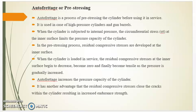Now we will see autofrettage or pre-stressing. Autofrettage is a process of pre-stressing the cylinder before putting it into service. It is used in high-pressure cylinders and gun barrels. When the cylinder is subjected to internal pressure, the hoop stress sigma t at the inner surface limits the pressure capacity. In the pre-stressing process, residual compressive stresses are developed at the inner surface. When the cylinder is loaded internally, these residual compressive stresses decrease, become zero, and finally become tensile as pressure is increased.